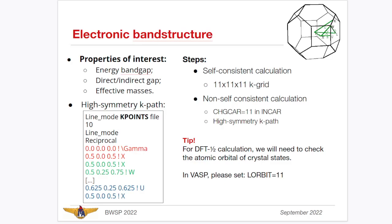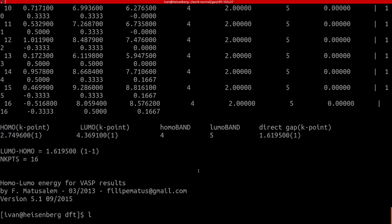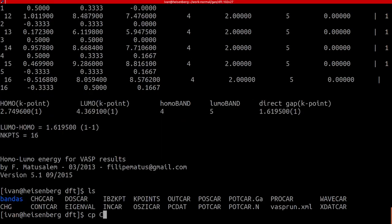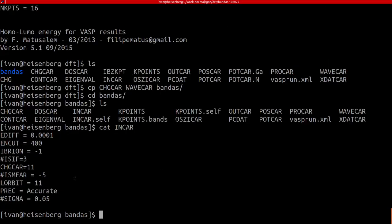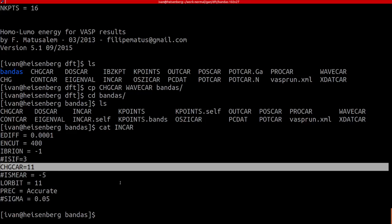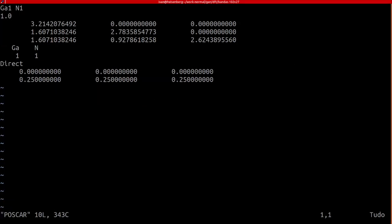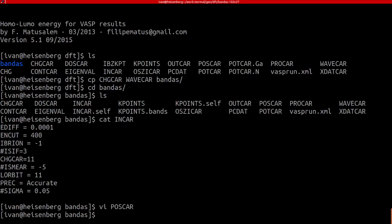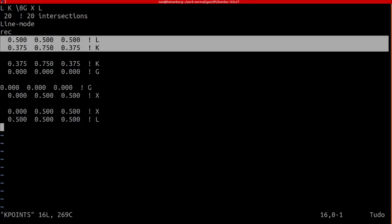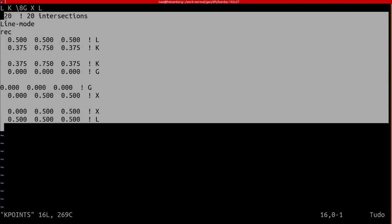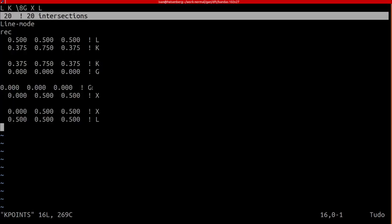We can also go for bands. Actually, you're supposed to copy the CHGCAR. It's basically the same thing with only the addition of ICHARG equals 11. POSCAR does not change at all. POTCAR is also the same in KPOINTS file. As you can see, we provide a line mode with different paths. Starts with L point, goes to K, K goes to gamma, gamma goes to X, X goes to L with 20 points on each path of this.